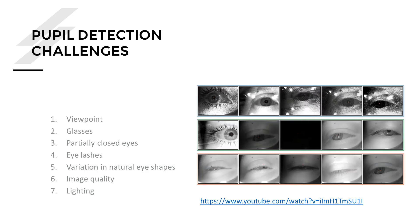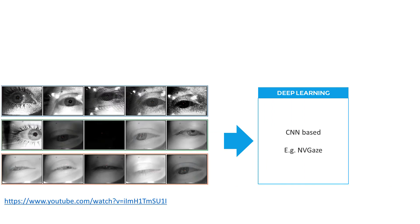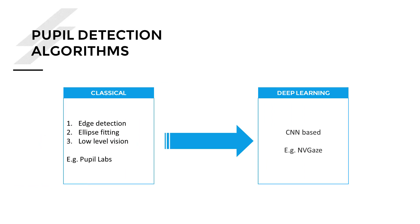It is a challenging problem depending on the application. In medical applications we can control many variations, but in gaming applications it is very difficult — pupil tracking may need to run at 60 frames per second in a headset. Algorithms for pupil detection vary a lot: classical implementations use edge detection followed by ellipse fitting, while modern methods are deep learning based. For example, NVIDIA's NVGaze uses a CNN-based pupil detector.